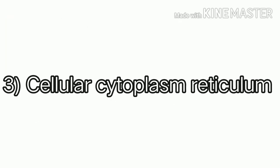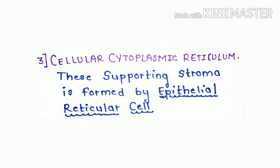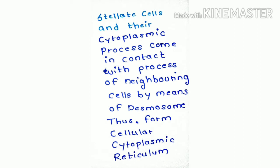The third component is the cellular cytoplasmic reticulum. It is the supporting stroma of the thymus, made up of epithelial reticular cells. These are stellate cells whose cytoplasmic processes come into contact with the processes of neighboring cells by means of desmosomes, forming a cellular cytoplasmic reticulum. The thymic cytoplasmic reticulum differs from that of other organs, which are made of reticular fibers — here it is made of epithelial reticular cells.